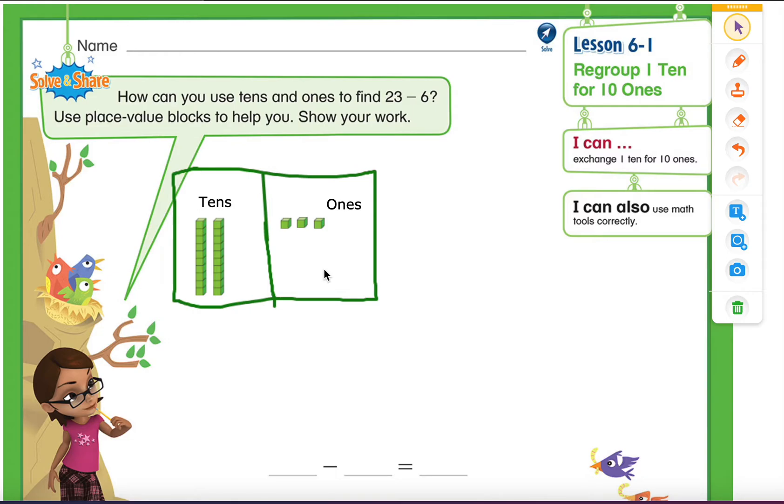What does that mean? That means we are going to exchange or trade our 10 for 10 ones. So what I'm going to do here, this ten, I am going to exchange it for 10 ones. So let's do that. So this ten is not going to be here. And we are replacing it for 10 ones. So let's add 10 ones: 1, 2, 3, 4, 5, 6, 7, 8, 9, 10.